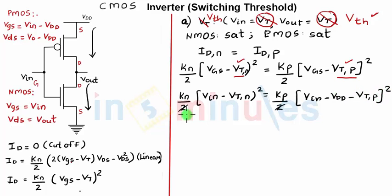2 gets cancelled and I will take the square root of the equation written above and I will rearrange the terms. This is VIN minus VTN. Once I take the square root because it is a square term, it will stay as it is. KP by KN and I have taken the square root and the rest of the term.